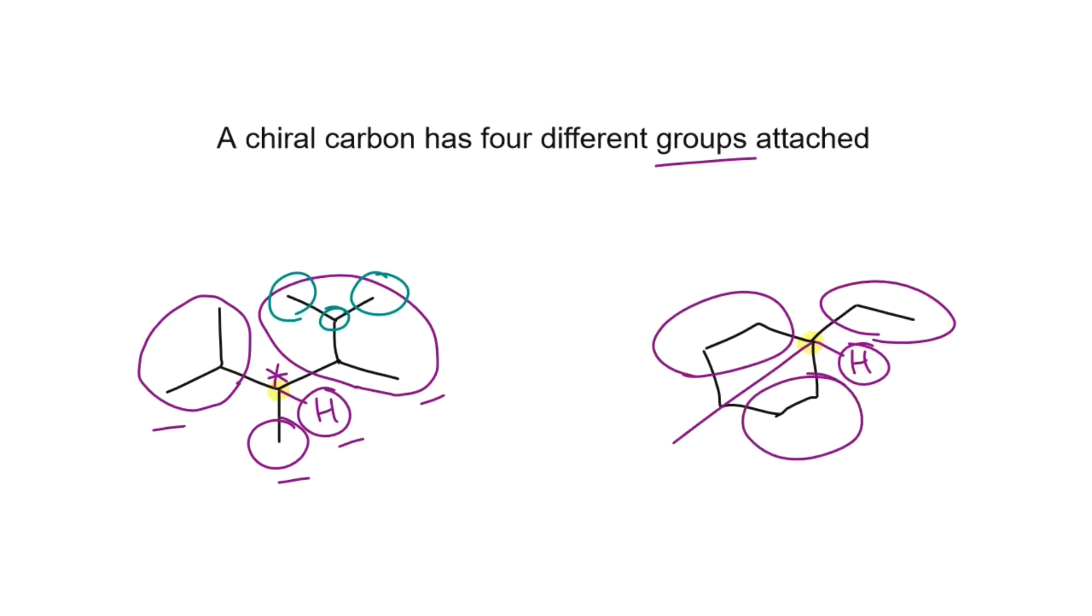So we can see here that each half of the ring is the same. So this is not a chiral carbon.